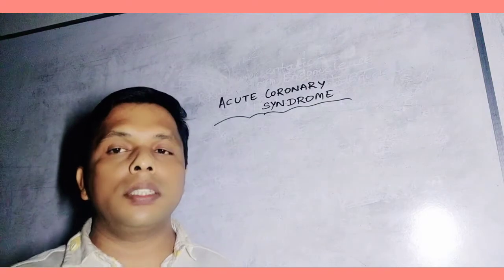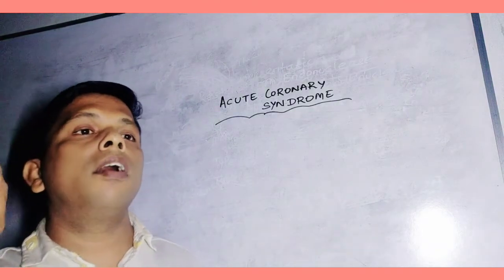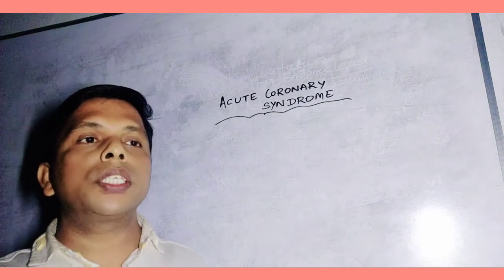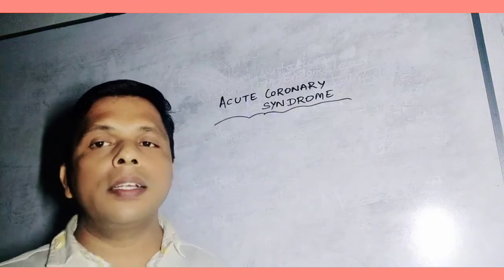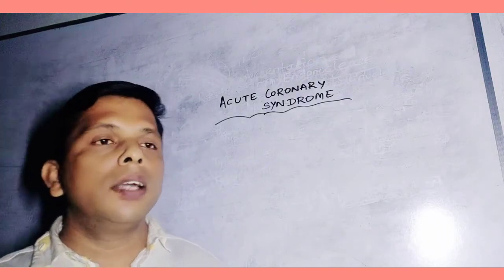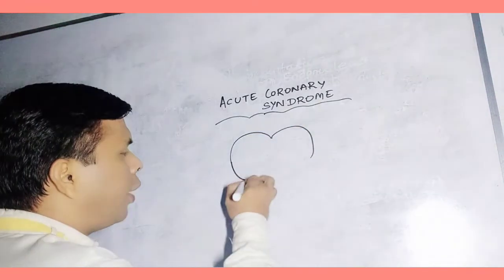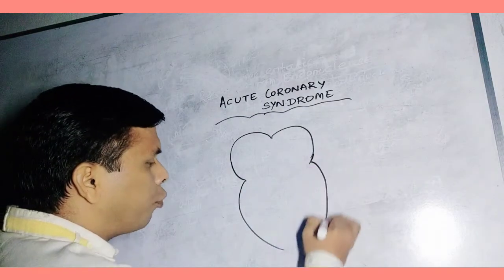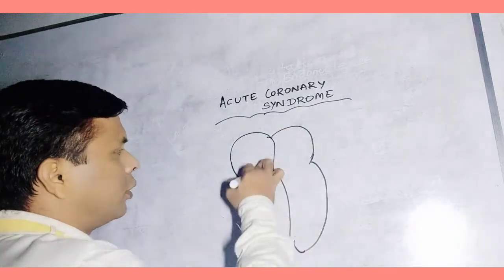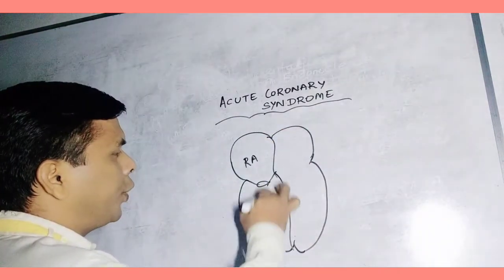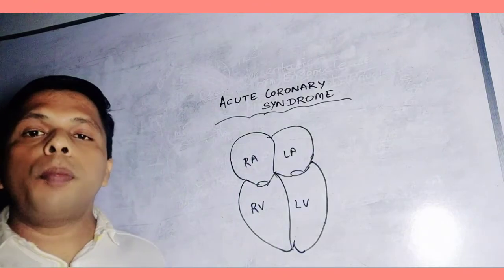We know it is a set of complicated conditions which causes blockage of blood flow to heart by coronary artery. Suppose this is the heart. Which part is important? The left ventricle is very important. This is right atrium, right ventricle, left atrium, and left ventricle.